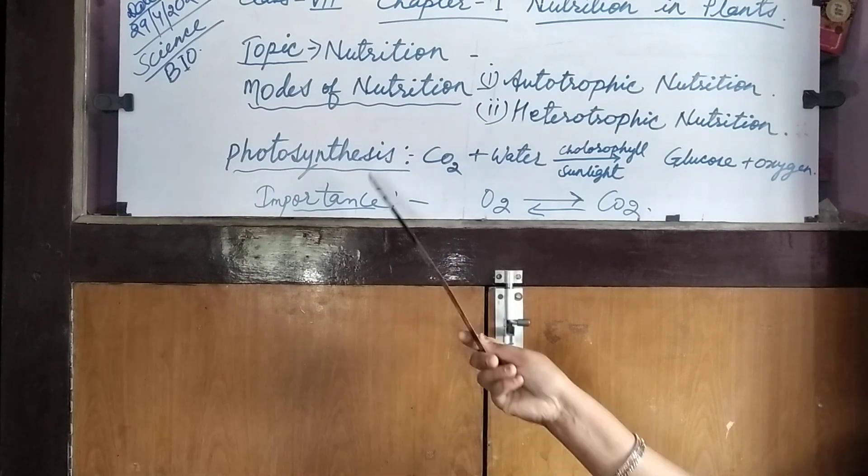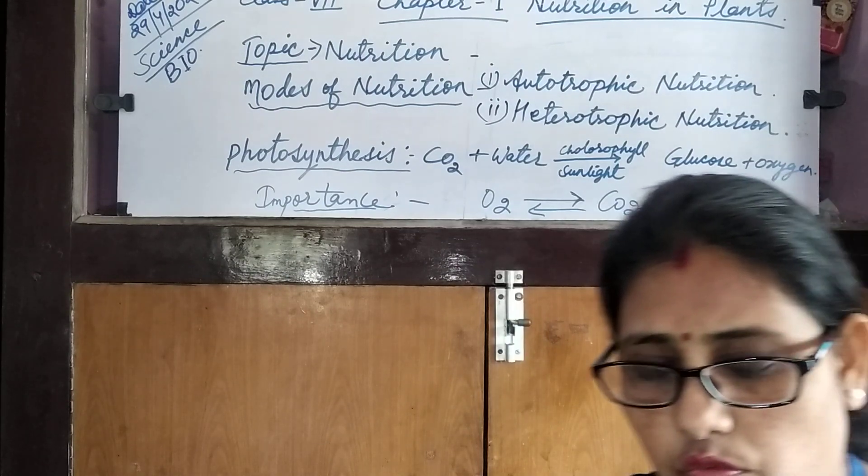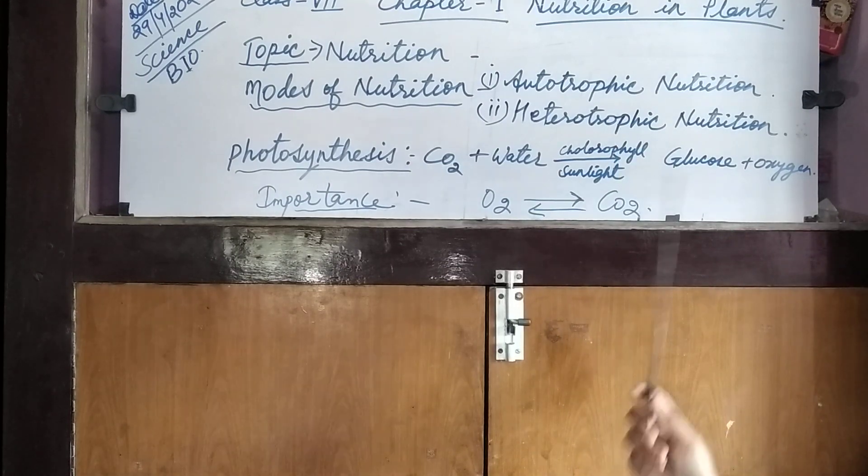Autotrophic nutrition is the mode of nutrition in which green plants make their own food by themselves through the process of photosynthesis. Photosynthesis is a process in which green plants, with the help of carbon dioxide from air, water and minerals from roots, and solar energy trapped through chlorophyll, combine all these raw materials to make food.